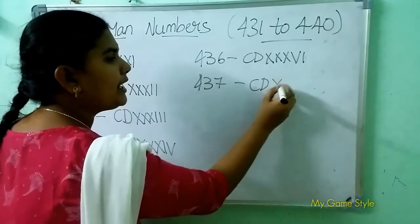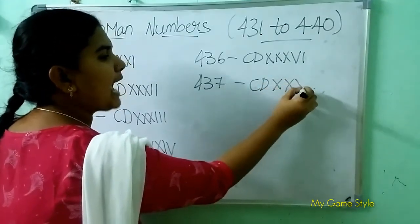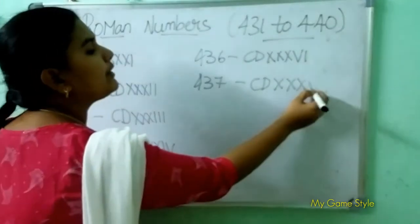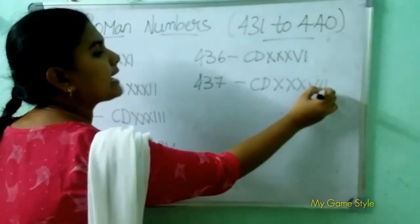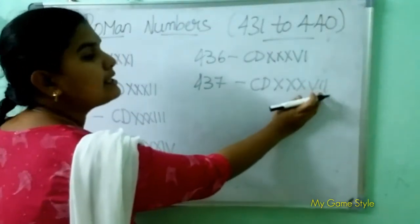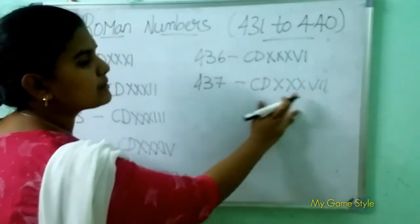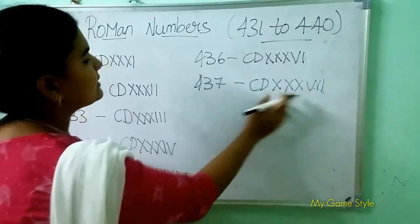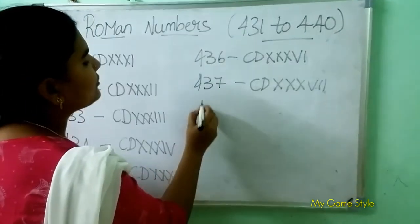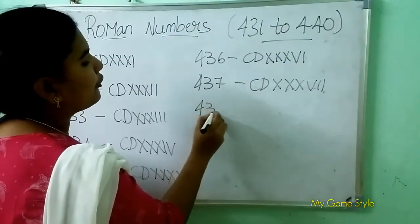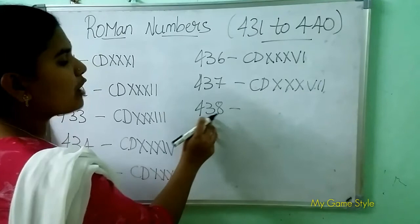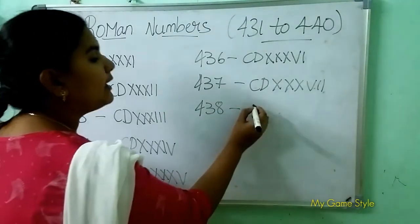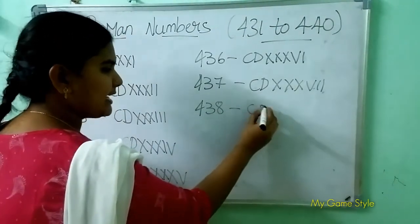Next, 437 — how to write 437? CD is 400, triple X is 30, VII (double I after V) is 7. So this means 437.